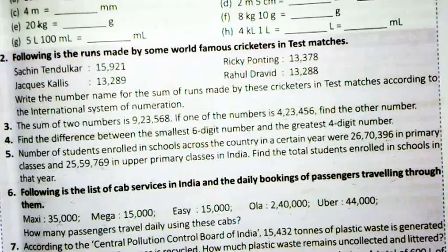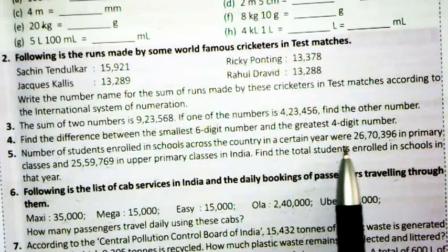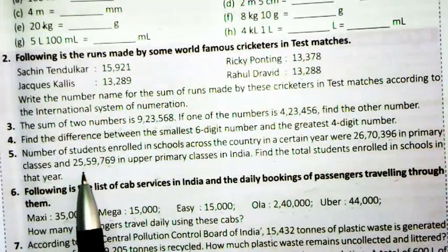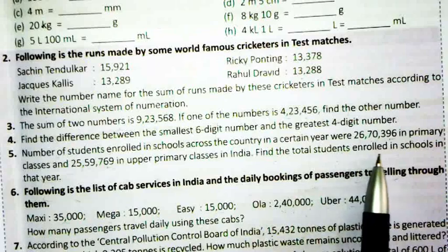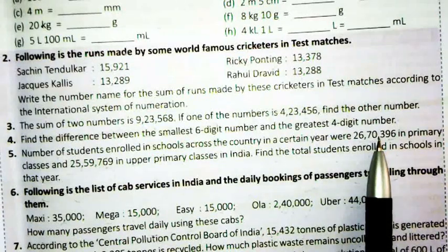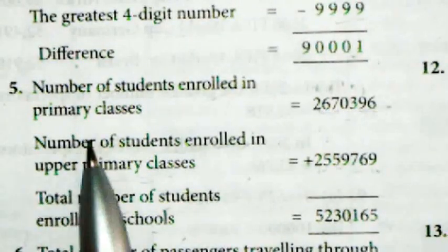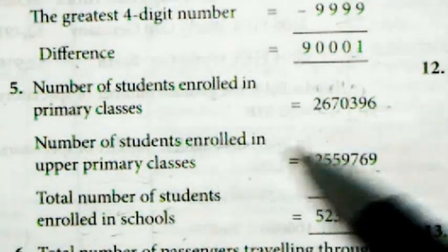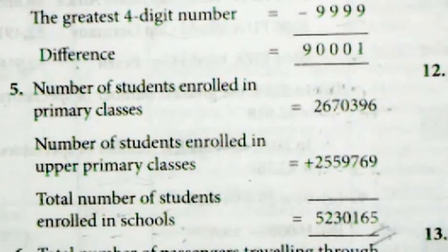Question number five: number of students enrolled in schools across the country in a certain year were 26,70,396 in primary classes and 25,59,769 in upper primary classes in India. Find the total students enrolled in that year. Hum in dono values ko add kar denge aur total students pata chal jayenge.